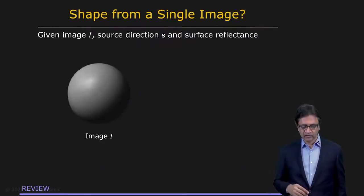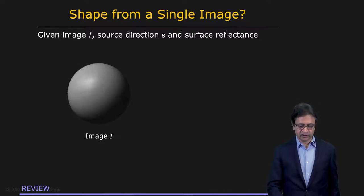So first, let's take a look at why this is a hard problem. Here's what's given to us. We're given an image of the object, a simple object in this case, the image I. We know everything we need to about the light source, the direction of the light source and the brightness of the light source. And we are also given the reflectance properties of the object itself.